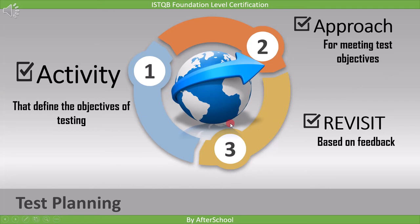So these are the three main points of test planning: defining the test objective, defining the test approach, and updating the plan based on feedback.